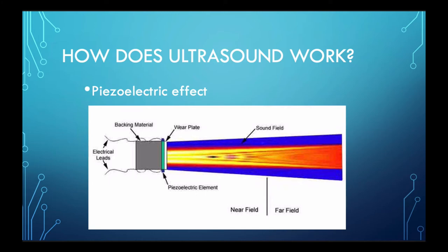We have piezoelectric material, or crystals, within these probes. When electric current is applied to these piezoelectric crystals, they vibrate, and the vibrations then produce sound waves that travel outward away from the probe. As these waves travel through and bounce off of structures, some of these waves will then be transmitted back to the crystals. The same crystals then receive these returning sound waves and vibrate, and their vibrations then result in electrical current that's converted into digital images.